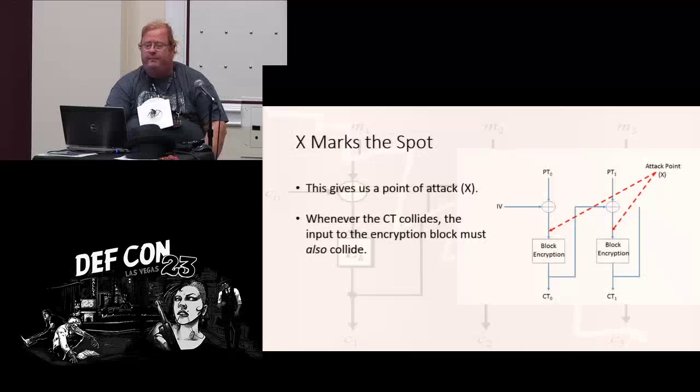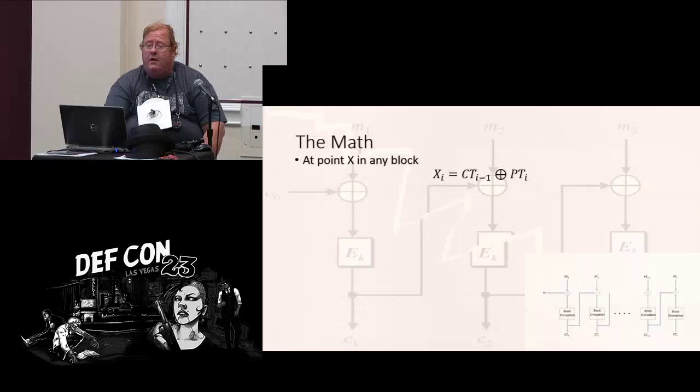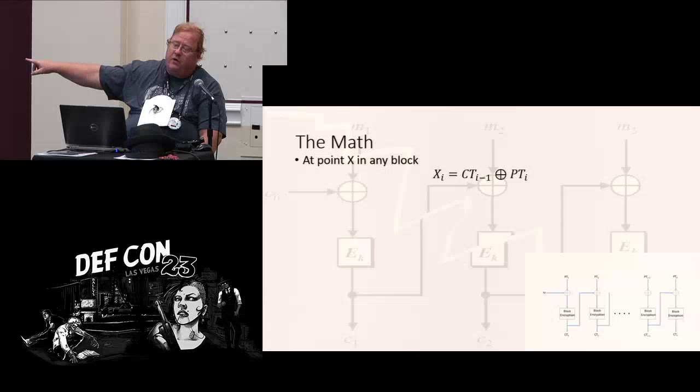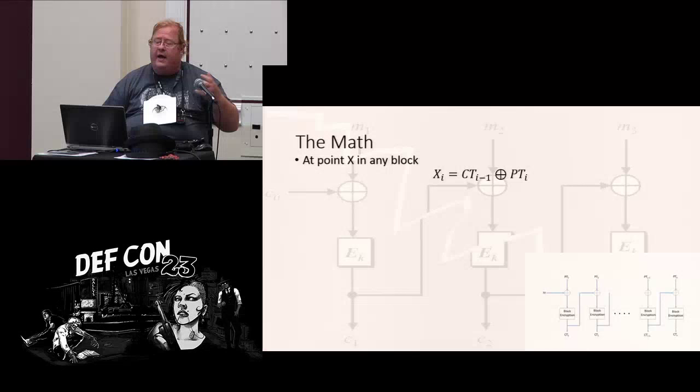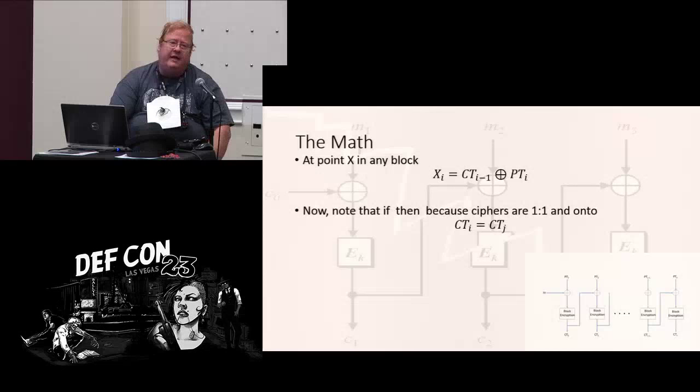Now, let's assume for a moment that we get those two points, the CT0 and CT1. That's the ciphertext. Assume that they're identical. Well, if they're identical, then we can imply that the point X, which we have marked up here, must also have the same value. Not as the ciphertext, but the point X has to have the same value. Because if it didn't, the cipher wouldn't be one-to-one and onto. So it has to be this way. The X has to be identical.